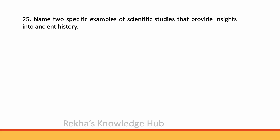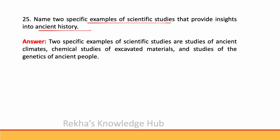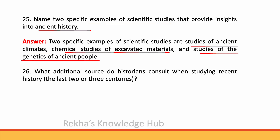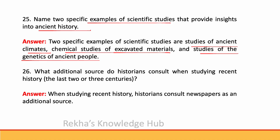Name two specific examples of scientific studies that provide insights into ancient history. Two specific examples are studies of ancient climates, chemical studies of excavated materials, and studies of the genetics of ancient people. When studying recent history — the last two or three centuries — historians consult newspapers as an additional source.